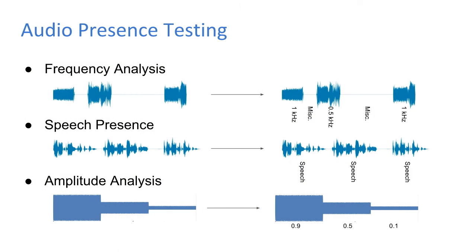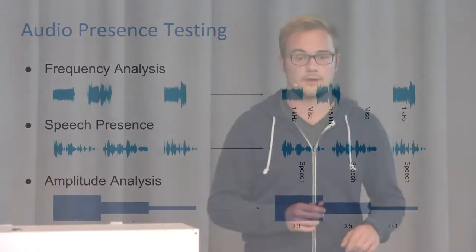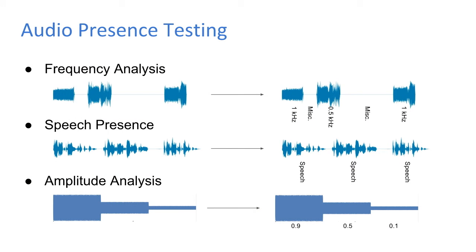The second category is presence testing. We currently expose three algorithms: frequency analysis, speech presence, and amplitude analysis. For frequency analysis, we can identify different active speakers — imagine a meeting where each participant plays a different frequency, and you can verify that certain speakers have been playing out frequencies. We get regions classified by frequency as a result. For speech presence, we get regions classified as active speech. For amplitude analysis, we can verify that certain speakers are not too loud or too silent.